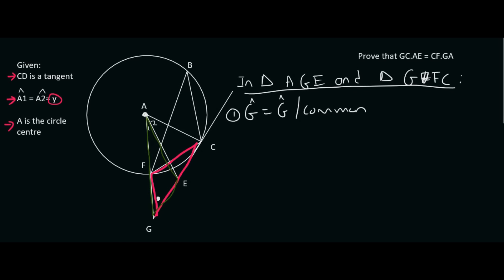Number two, so whenever you have a tangent and a chord, then the angle that is trapped between the tangent and the chord, which is this angle here, that's always going to be equal to the angle in the opposite segment like that. Remember, that's called the tan chord theorem. So we can say that angle FCG, because I can't just say angle C because that could be this, this, or that one. So I'd rather say FCG is equal to angle B. Why? Tan chord theorem.